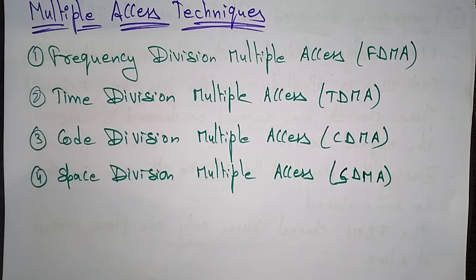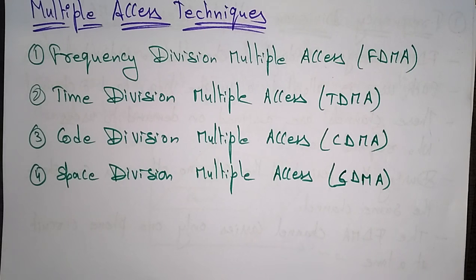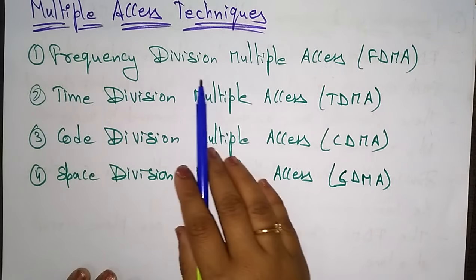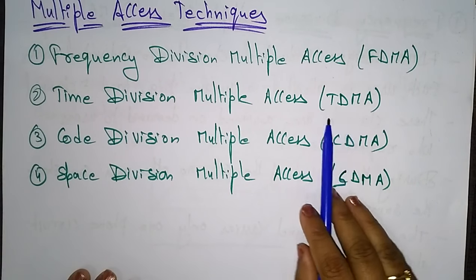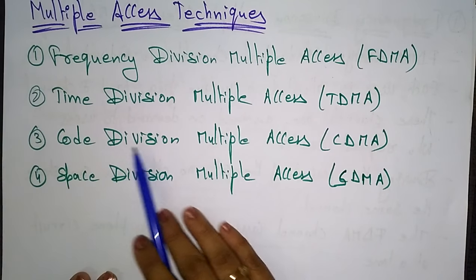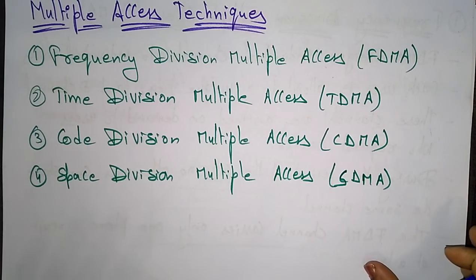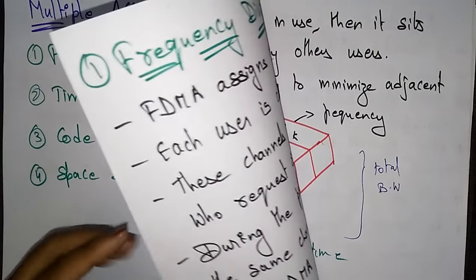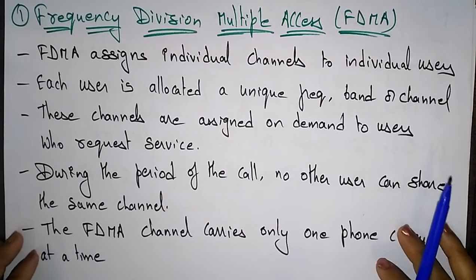Coming to the next topic: multiple access techniques. There are different types of multiple access techniques in wireless communication. The first one is Frequency Division Multiple Access (FDMA), Time Division Multiple Access (TDMA), Code Division Multiple Access (CDMA), and Space Division Multiple Access (SDMA). Let us discuss them one by one, starting with Frequency Division Multiple Access.